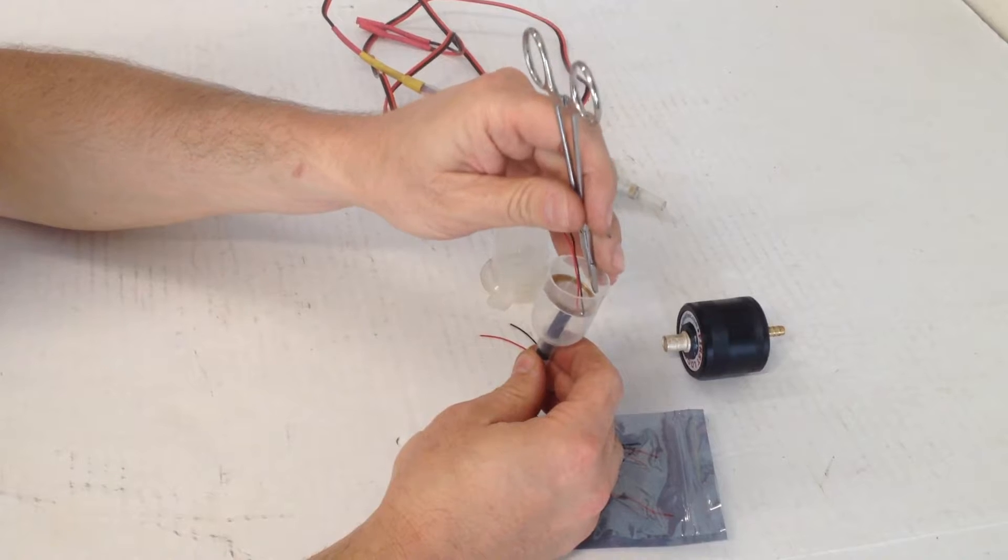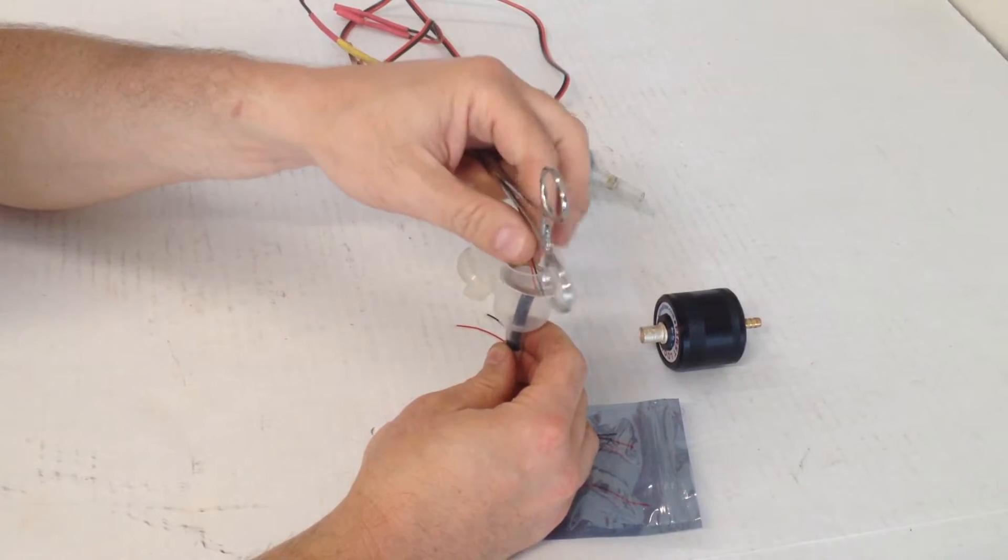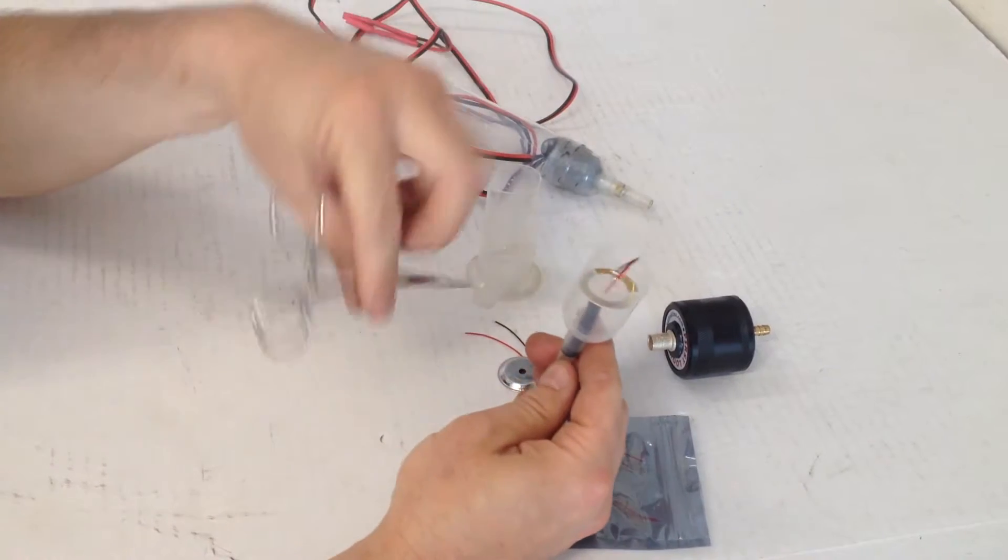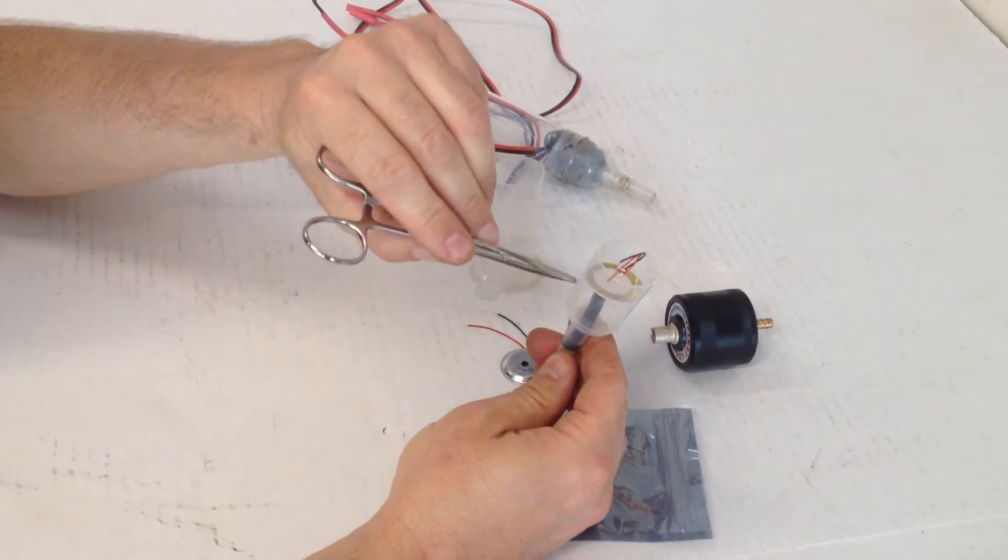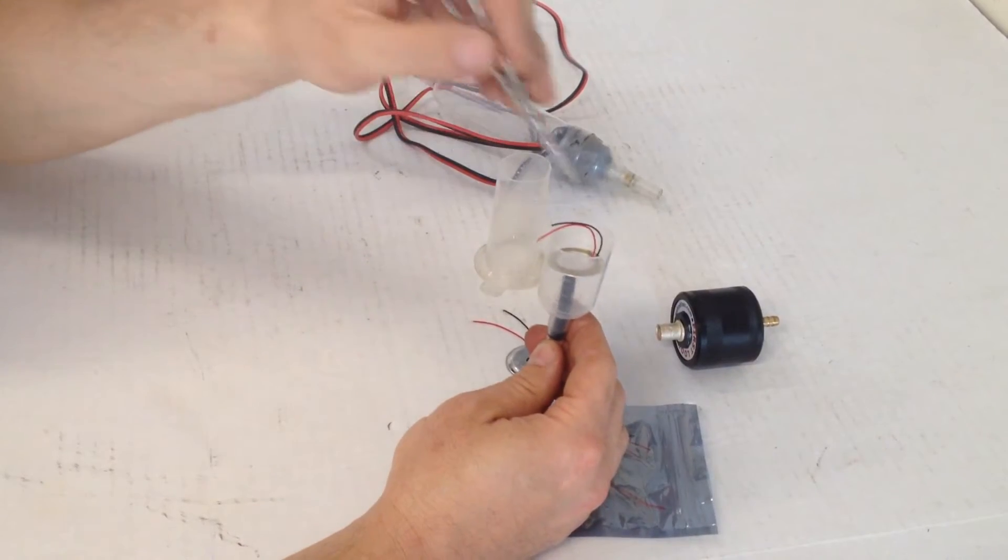So you want something solid for this sensor to rest on. So the best thing that I found that worked for me is just to put a little tubing and fill it up with a hot glue gun so this sensor has something to rest on.